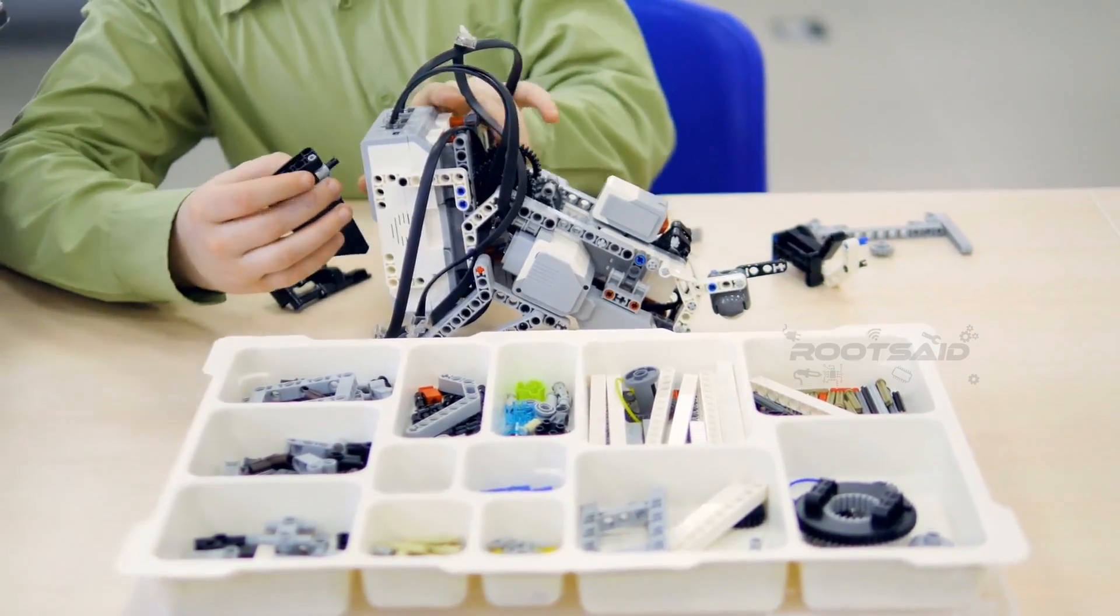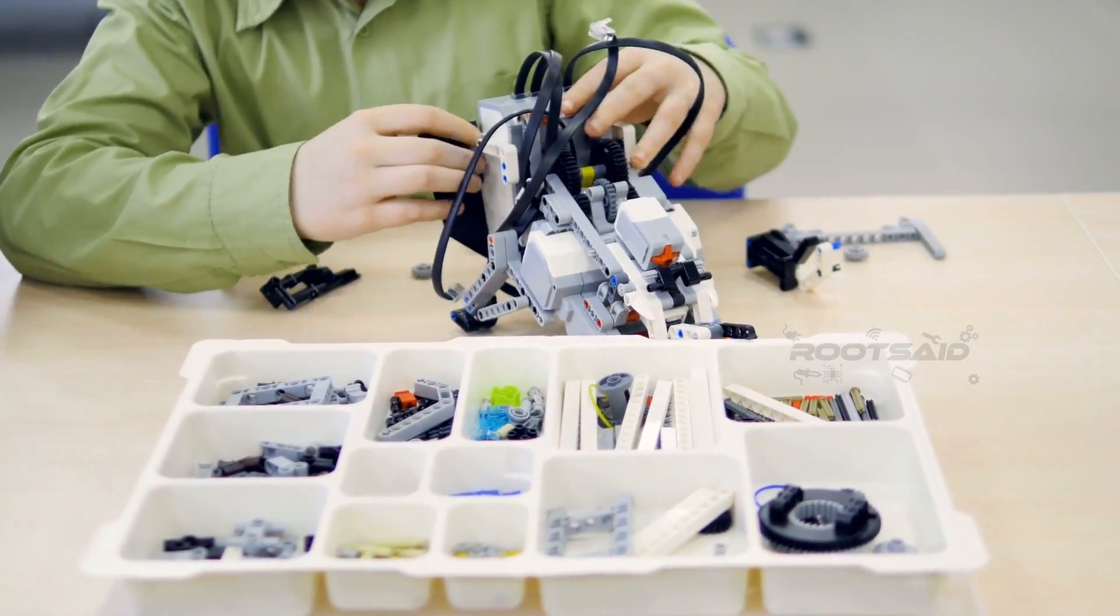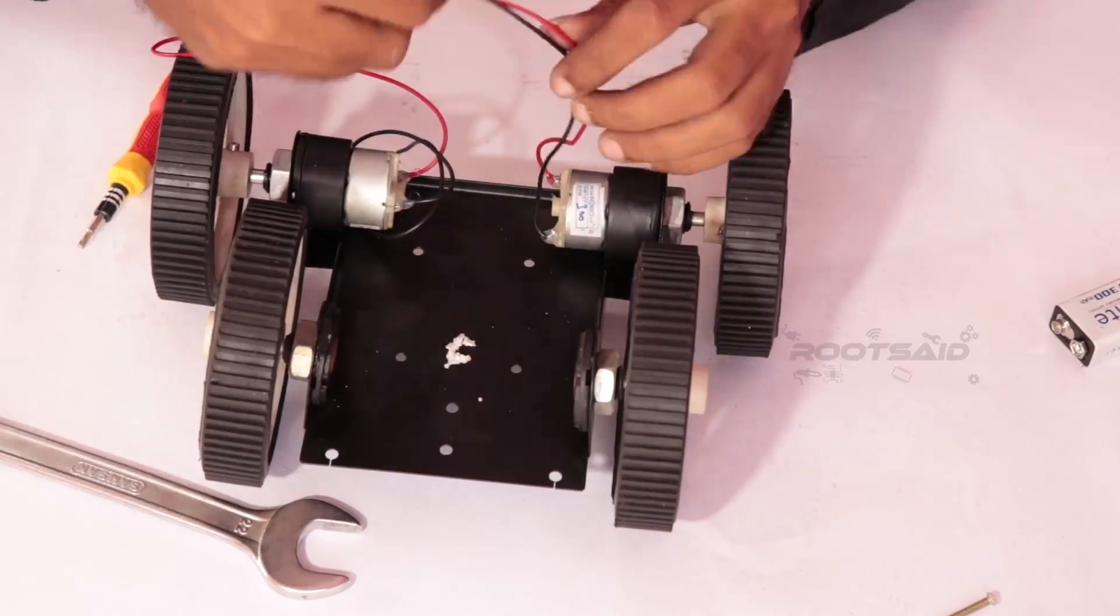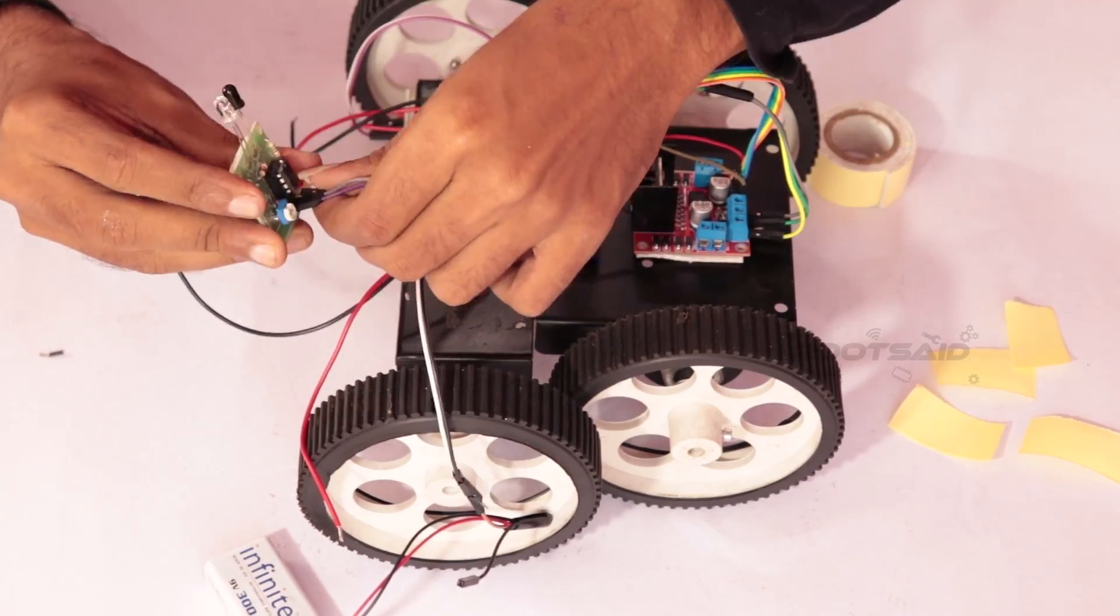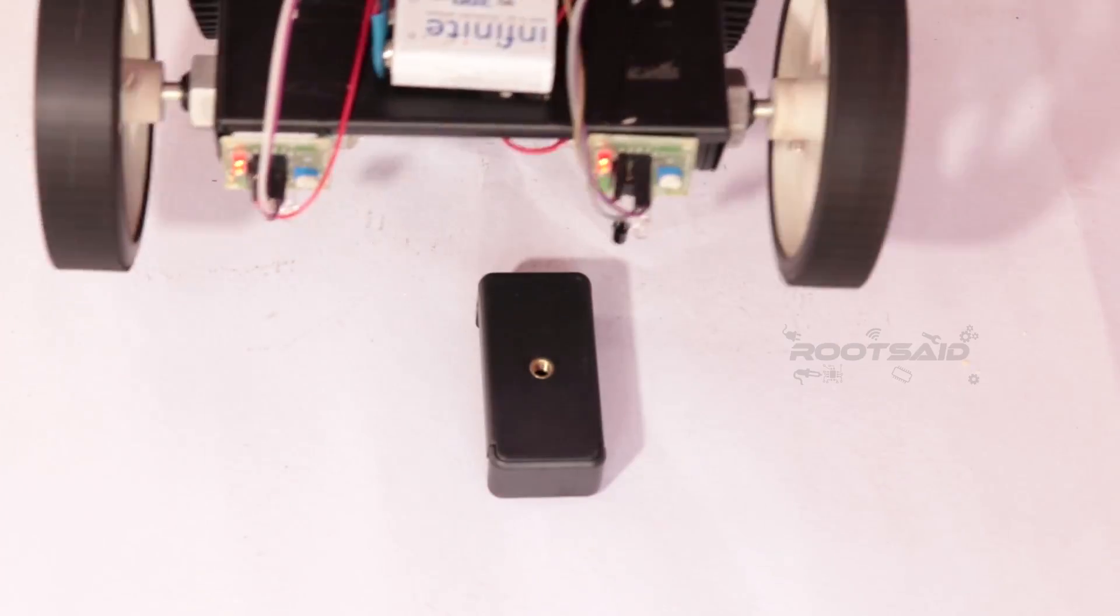Like I mentioned in the previous video, the most basic autonomous robot you can build in your home is a line follower. You can make a line follower with or without a microcontroller. If you are interested, I will share the link in the description.